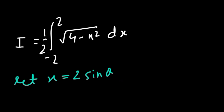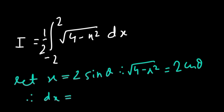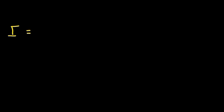To solve this integration, let's take the substitution x equal to 2 sine theta. This makes root over 4 minus x squared equal to 2 cosine theta, and dx is equal to 2 cosine theta d theta. The integration then turns out to be i equal to the integration from 0 to pi over 2 of 2 cosine squared theta d theta.